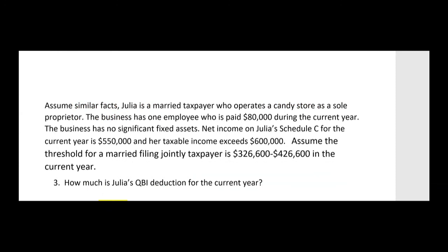What's going to be different in number three? Assume similar facts — Julia is a married taxpayer, she operates a candy store as a sole proprietor, the business has one employee paid $80,000 in wages, and the business has no significant fixed assets. But net income on her Schedule C for the current year is now $550,000 — a big number — and her taxable income exceeds $600,000.